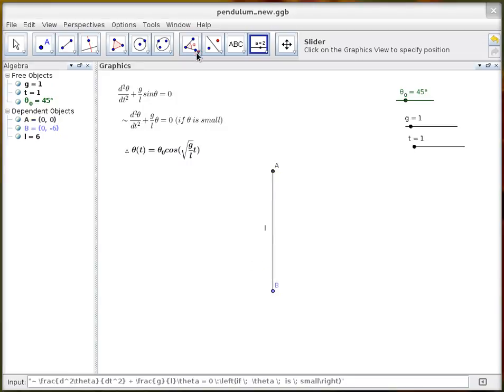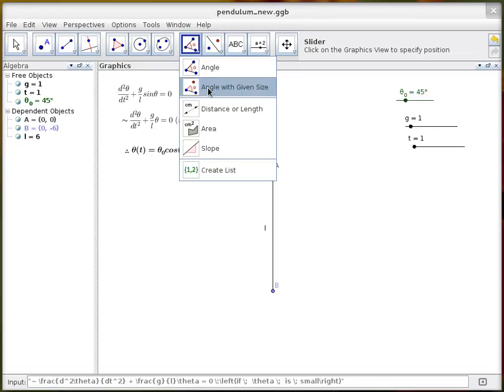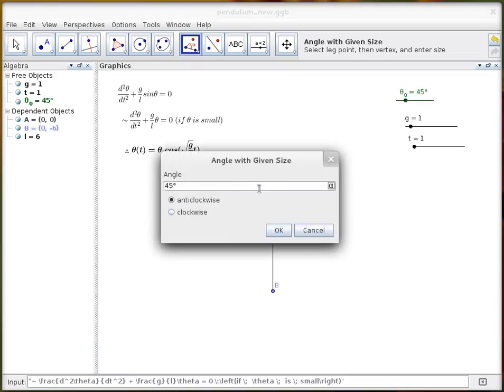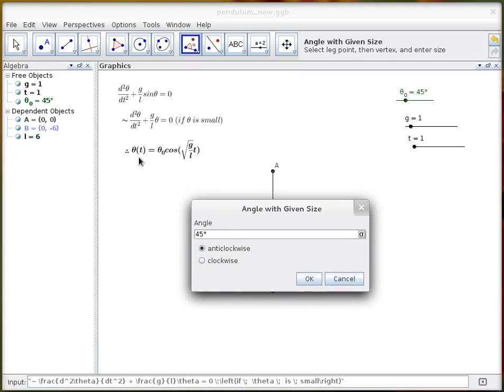Okay, so next tool we need is the angle given size tool so I'll select that and I'll click on B and A, and then I'm going to make an angle of this size here so I just need to copy this equation over so theta underscore zero.